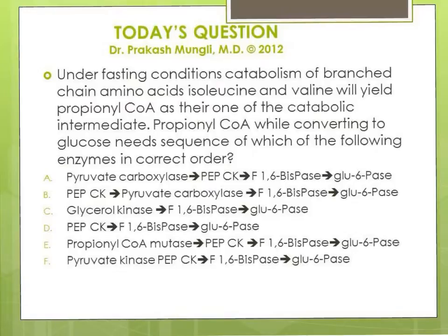In brief, during gluconeogenesis: lactate from anaerobic glycolysis can be converted to glucose; alanine from skeletal muscle breakdown can be converted to glucose; glycerol from triacylglycerol breakdown can be converted to glucose; and propionyl-CoA from catabolism of branched-chain amino acids like isoleucine and valine can be converted to glucose. Propionyl-CoA also comes from beta-oxidation of odd-number carbon fatty acids and from dietary fibers digested by gut microbes in the proximal colon.